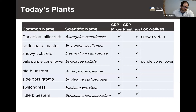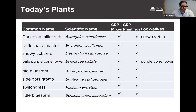Today we're going to be covering a pretty wide variety of plants. I'll be covering the first four and then Laura Jackson will cover the last four. These are all extremely characteristic plants of tall grass prairies and of most tall grass prairie plantings, including prairie strips — classics that you will definitely encounter in the field, especially in some of the older plantings.